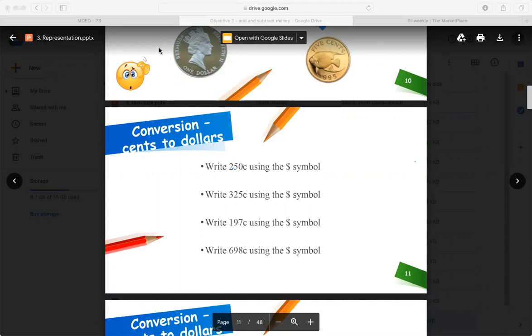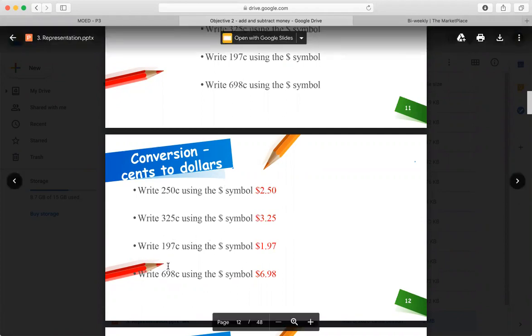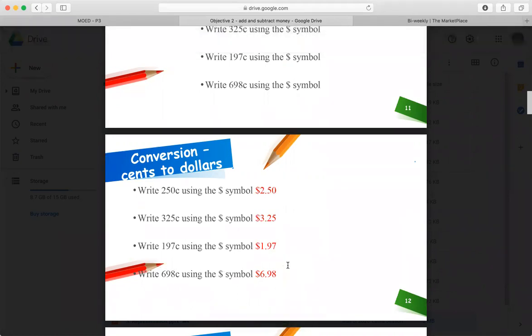So we put our decimal point in there. Oh, so now we draw it. Our decimal, there's two numbers behind the decimal point. So $2.50 would turn into $2.50. $325 would be $3.25. $197 would be $1.97. And $698 would be $6.98.